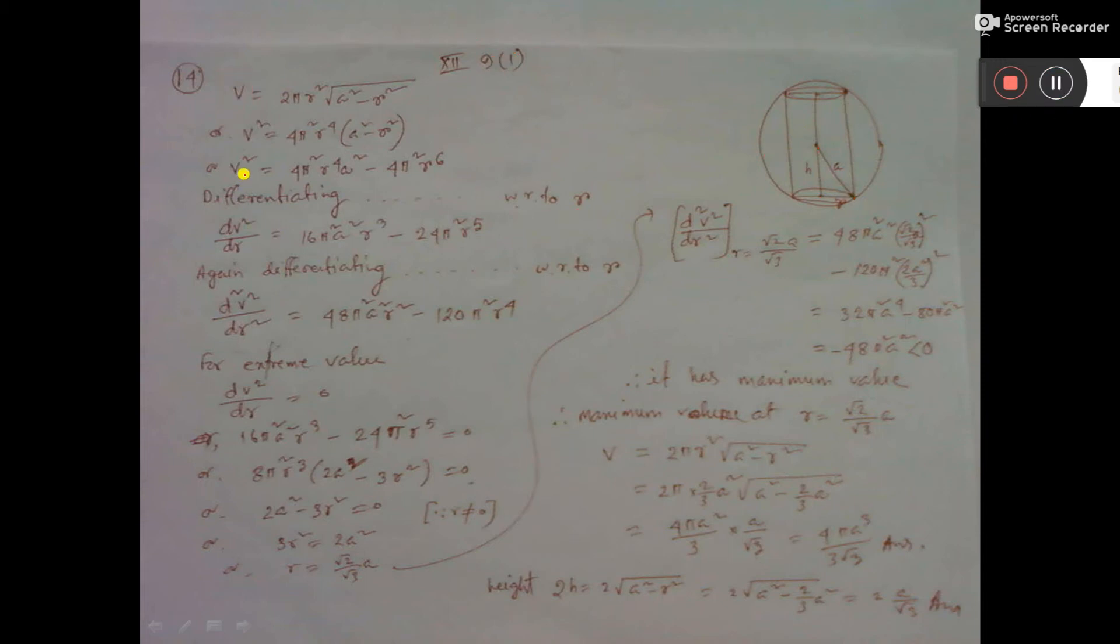Let's differentiate this V² two times. So, one is d/dr of V² is this. R only, r you differentiate. So, r⁴ will be 4r³. And here, r⁶ will be 6r⁵.